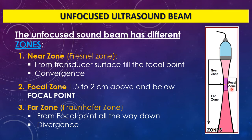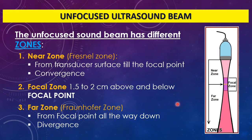The third zone starts from the focal point all the way to the end of the sound beam, where it ends by attenuation. This is called the far zone, sometimes called the Fraunhofer zone, and it is characterized by divergence. So we have a convergence zone and a divergence zone — the Fresnel zone and Fraunhofer zone, or near zone and far zone — with the focal zone in the middle. In total, we have three zones.